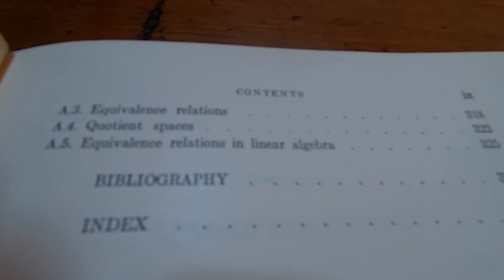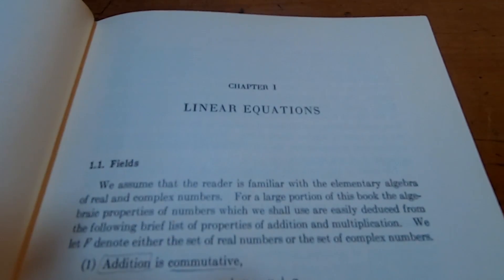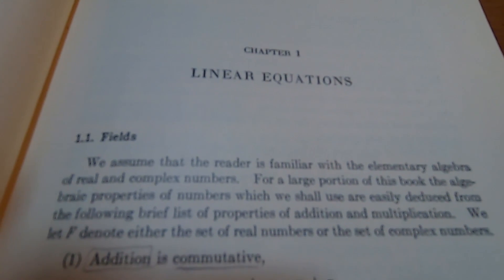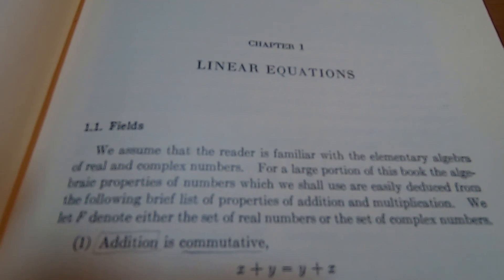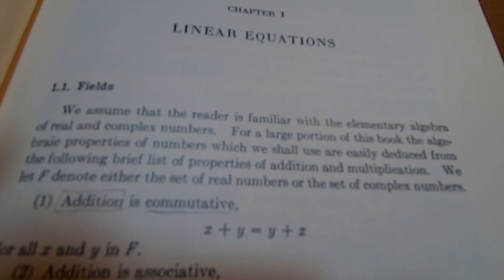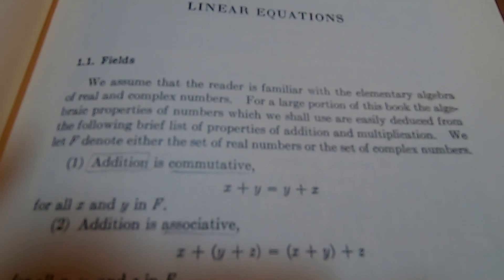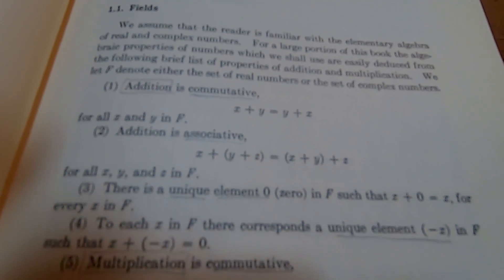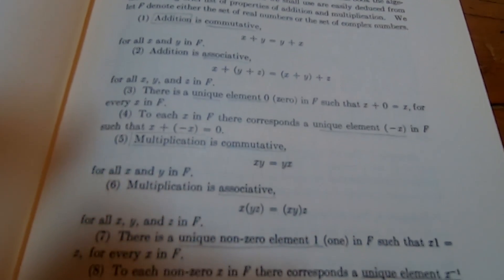Let's take a look further inside this legendary book. This is the very first chapter - it starts with linear equations, and as any good linear algebra book should, it begins with a treatment of fields, talking about defining what a field actually is and stating all of the axioms of a field. It's written very, very clearly.